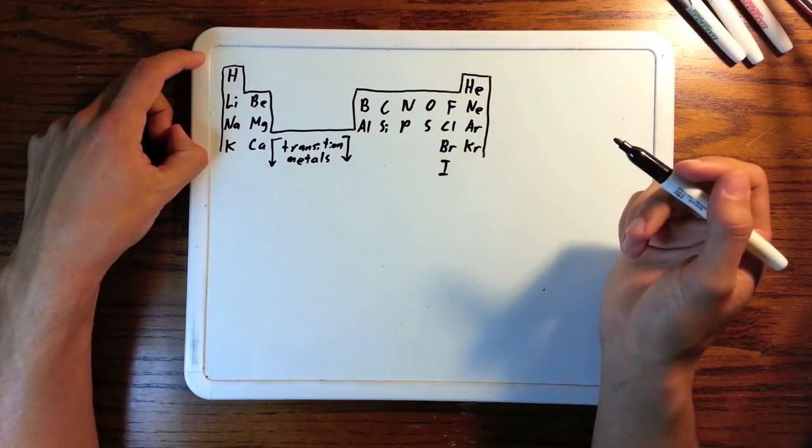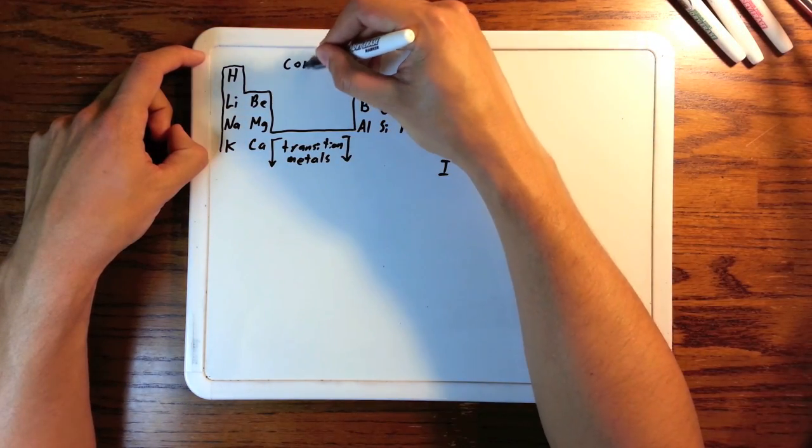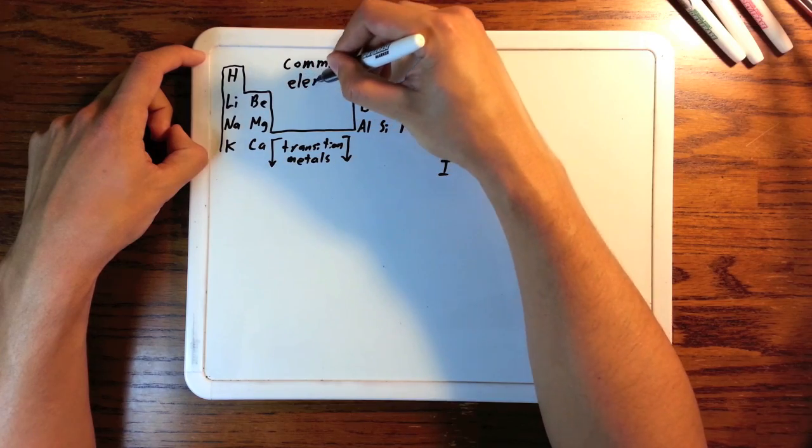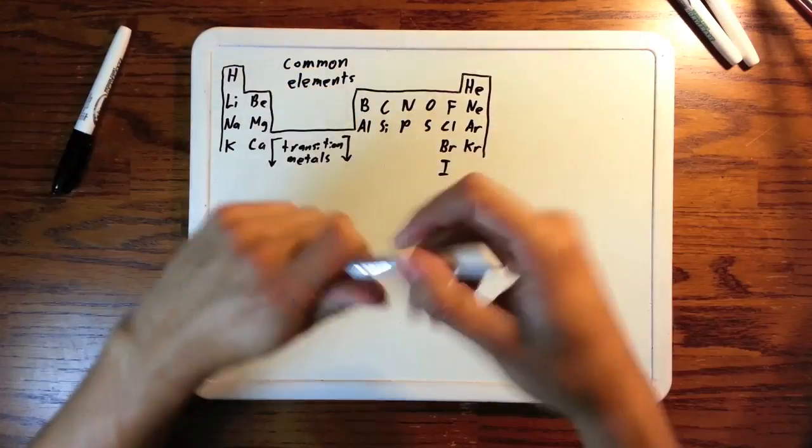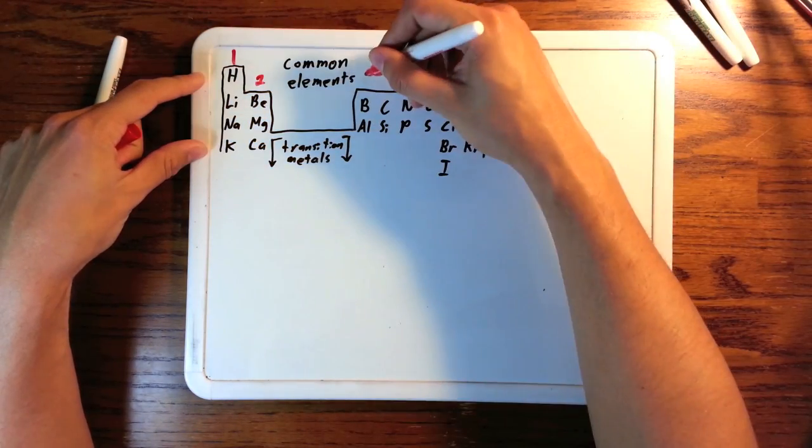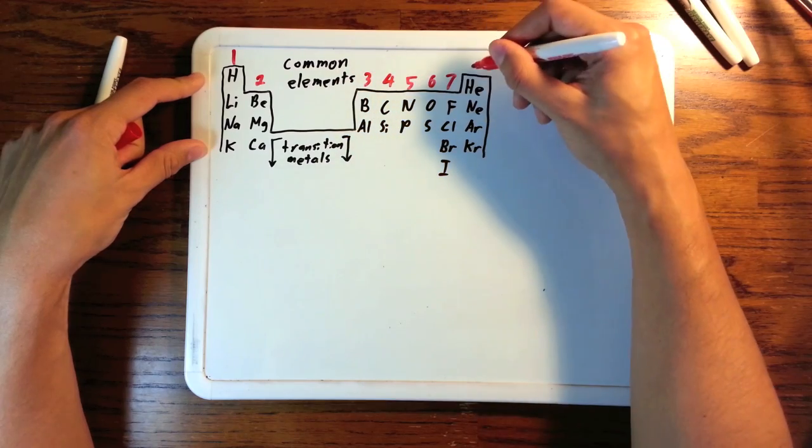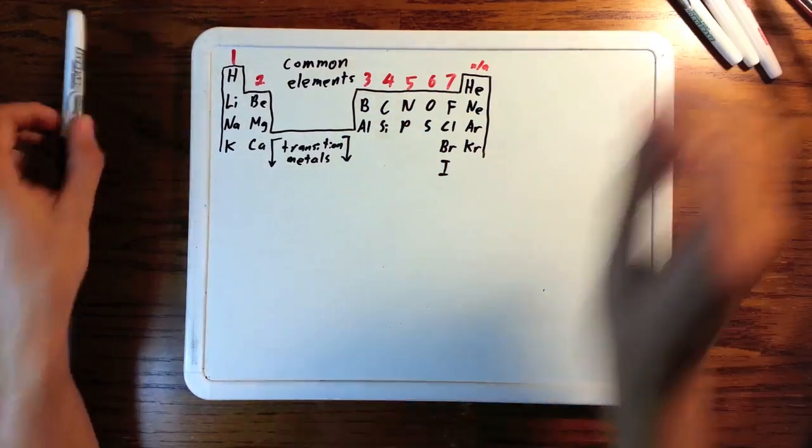A very basic skill you need in chemistry is to be able to write Lewis dot structures for any compound. First of all, here are some of the most common elements you'll see in general chemistry and organic chemistry reactions.